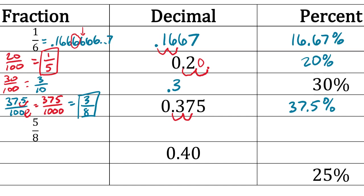Next row: five-eighths as a fraction. To get to a decimal, put it in your calculator — 5 ÷ 8 — and you get 0.625. To get to a percentage, move the decimal point two places to the right, giving us 62.5%.